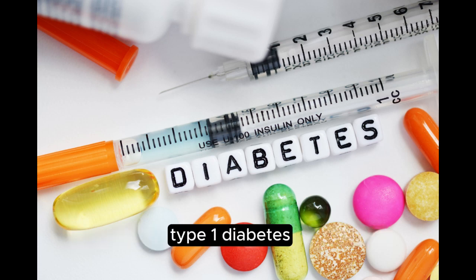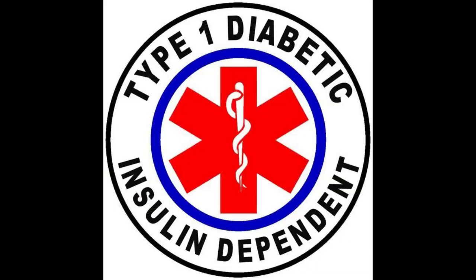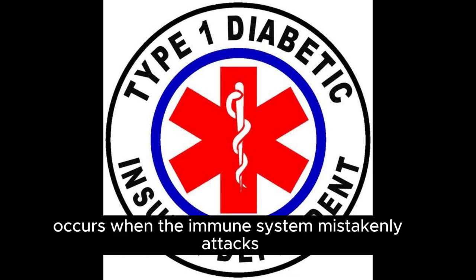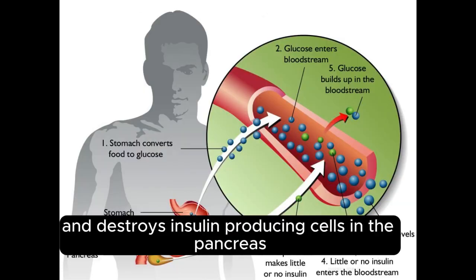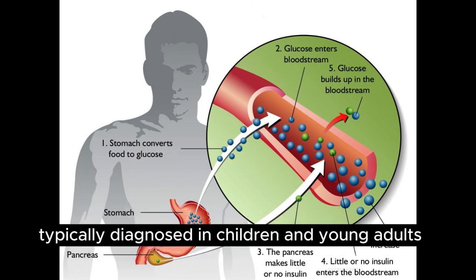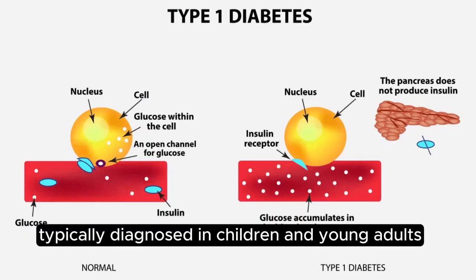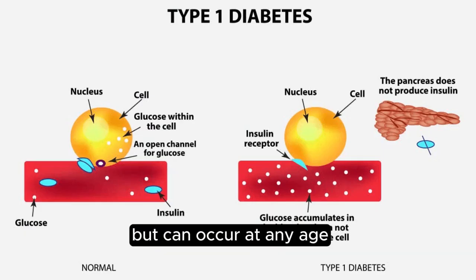Type 1 diabetes occurs when the immune system mistakenly attacks and destroys insulin-producing cells in the pancreas. It is typically diagnosed in children and young adults, but can occur at any age.